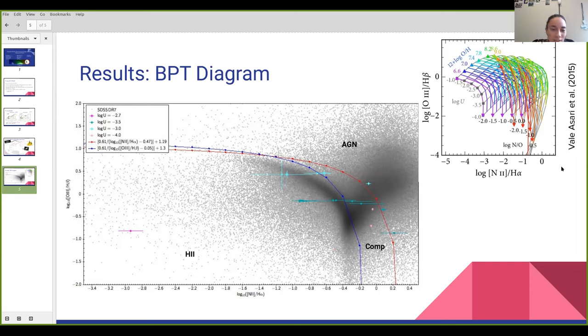We also see that when compared to the classification lines that are in blue—the maximum starburst line from Kewley 2001—and in red, another classification line which is the Seyfert-LINER from Kauffman 2003, we can see that most of our galaxies fall in the H2 region, or at least do not classify. We do not find any AGN, although we do find some composite galaxies.